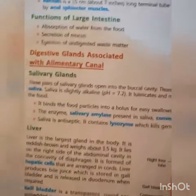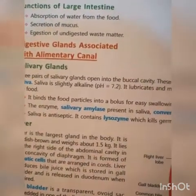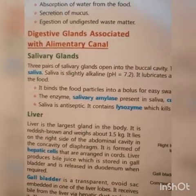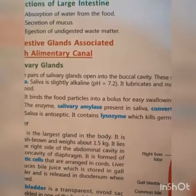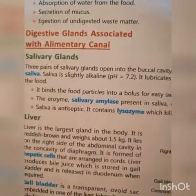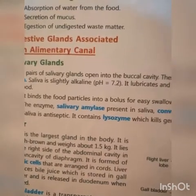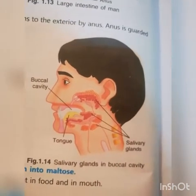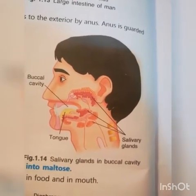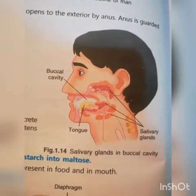Salivary amylase is also called Ptyalin. Never be confused — Ptyalin is also known as salivary amylase, which helps in digestion of carbohydrates in the mouth or buccal cavity. See the figure of the salivary gland and buccal cavity.